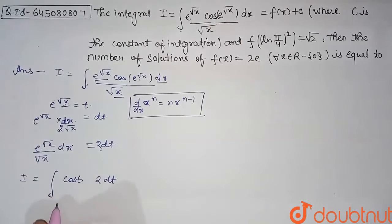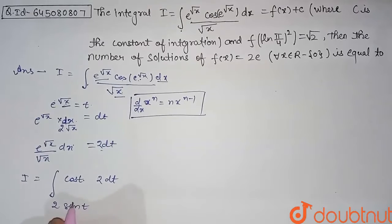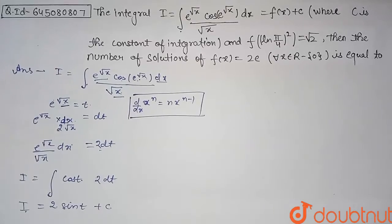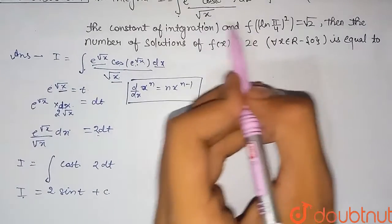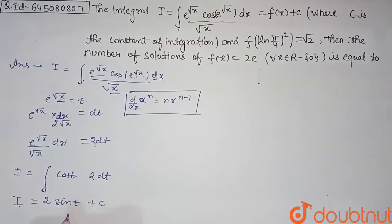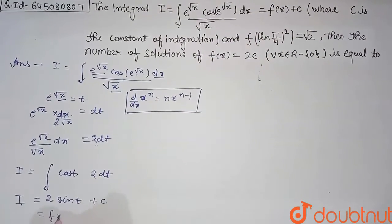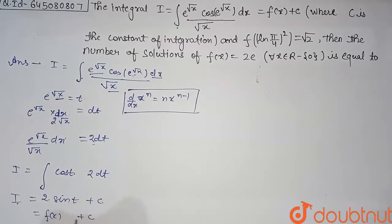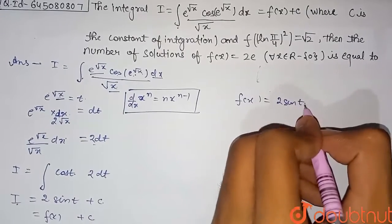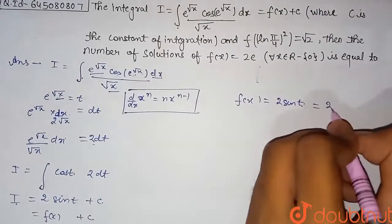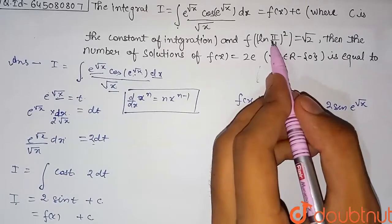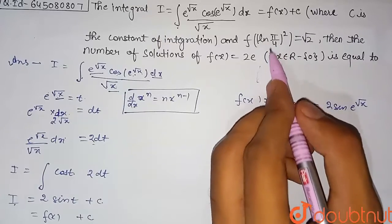Integrating this, we get 2 sin(t) + c. In the question, I = f(x) + c, so comparing we get f(x) = 2 sin(t). Substituting back the value of t, we get f(x) = 2 sin(e^(√x)).